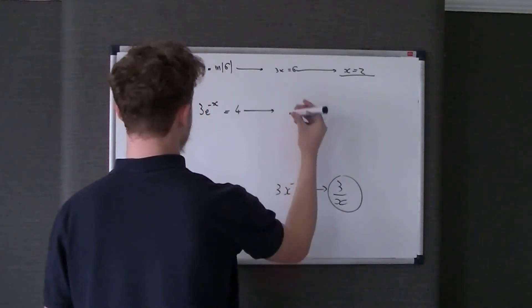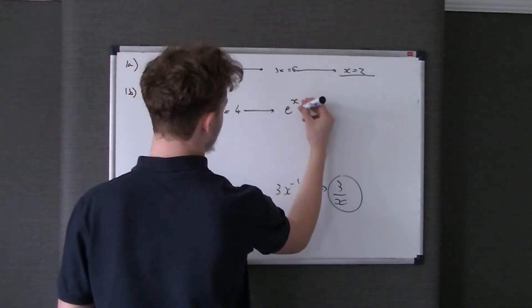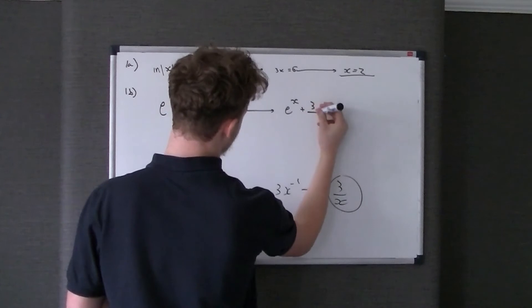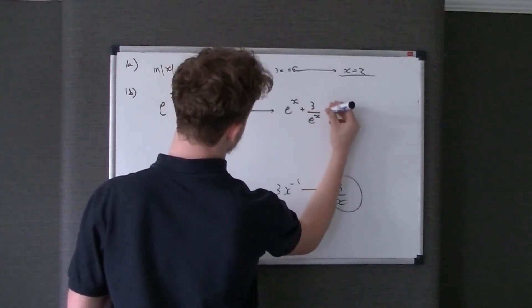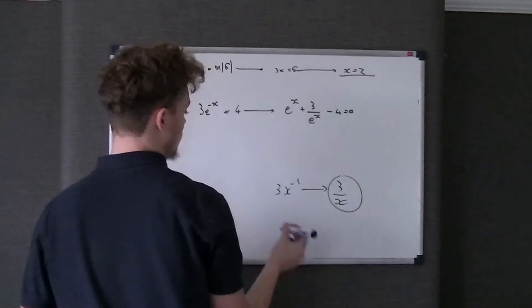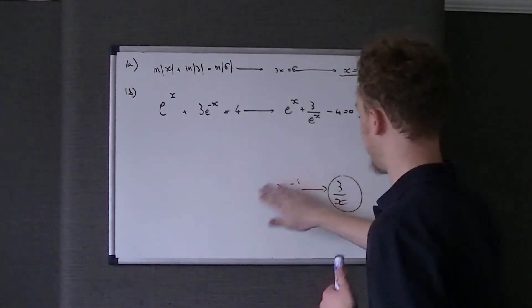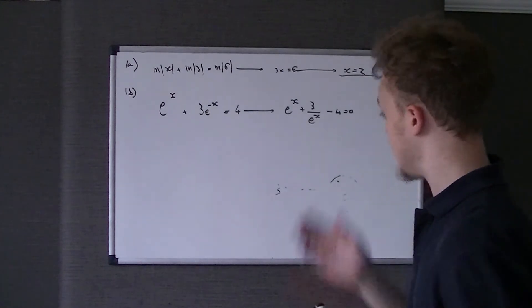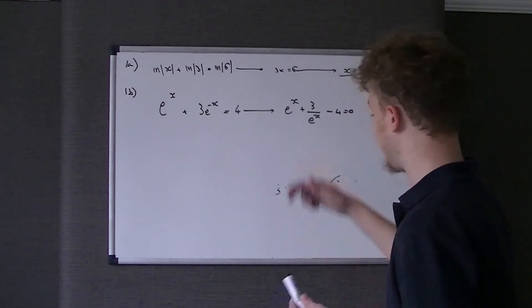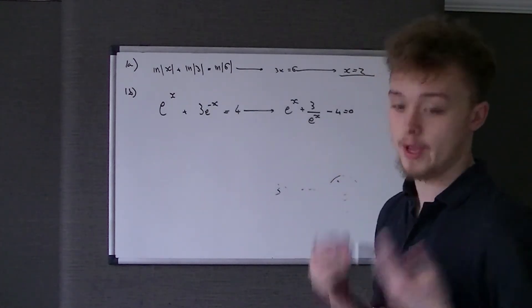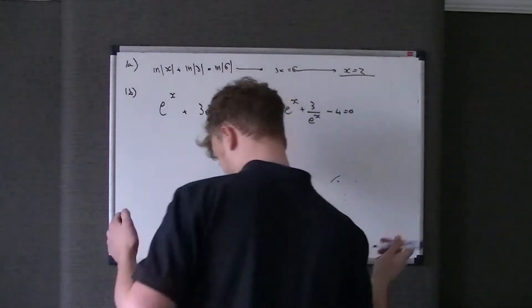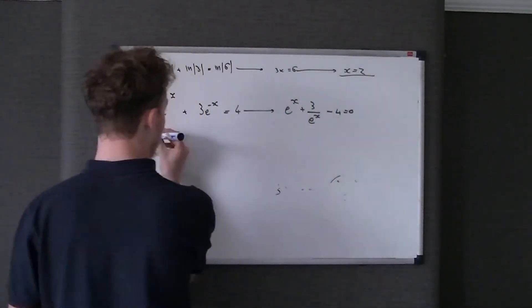So what we do is we do e to the x plus 3 over e to the x take 4 equals 0, or you might want to put that equal to 4 and then rearrange. But because I'm lazy, I'm going to leave it like that. Now, the next thing you'd want to do is, well, we don't really like this kind of fraction business here, so what we're going to do is times all of the fractions, or in other words both sides, by e to the x.